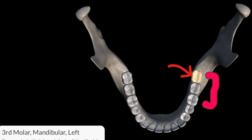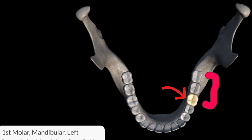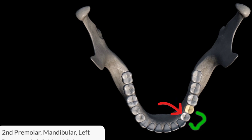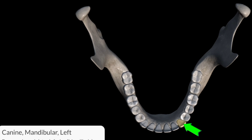This is the third molar of the left side. This is the second molar of the left side. This is the first molar of the left side. This is the second premolar. This is the first premolar. This tooth is called the canine of the left side.